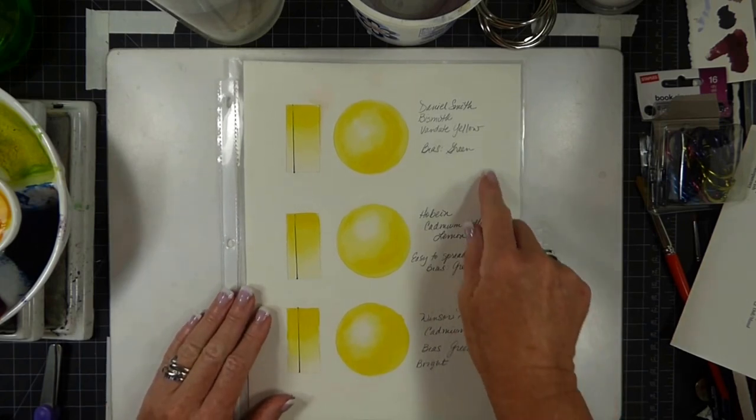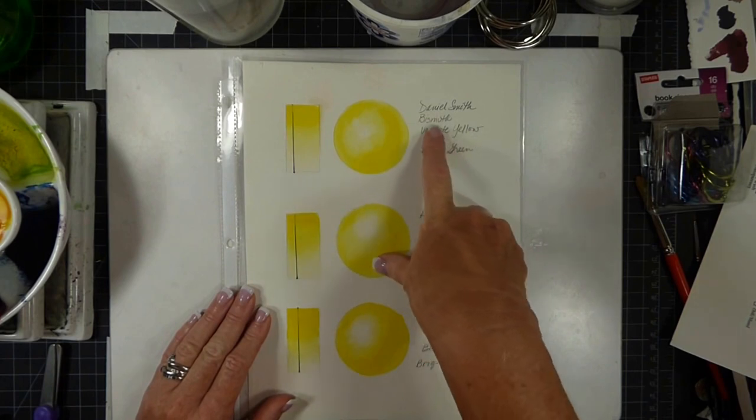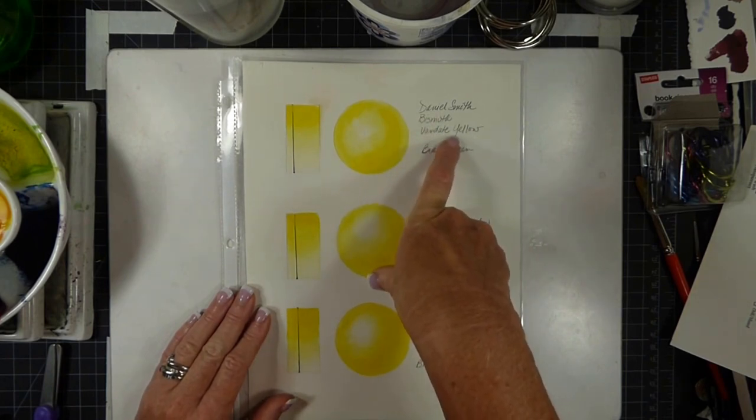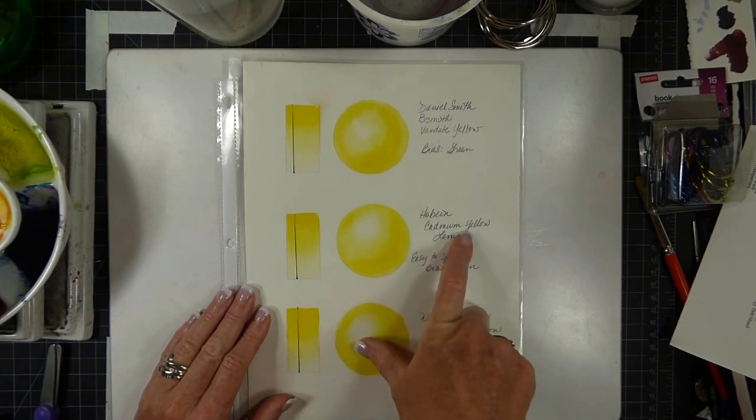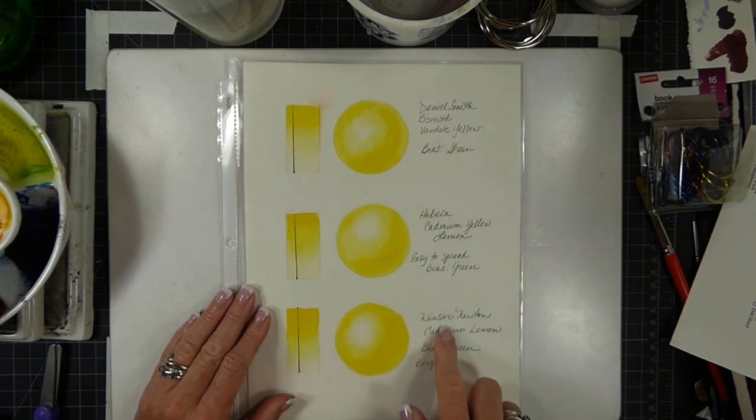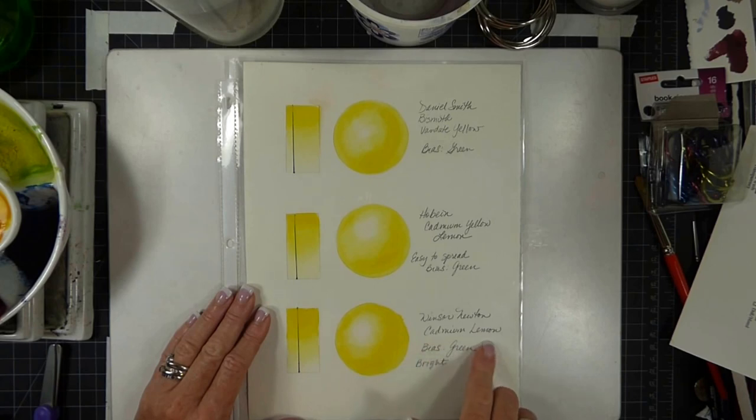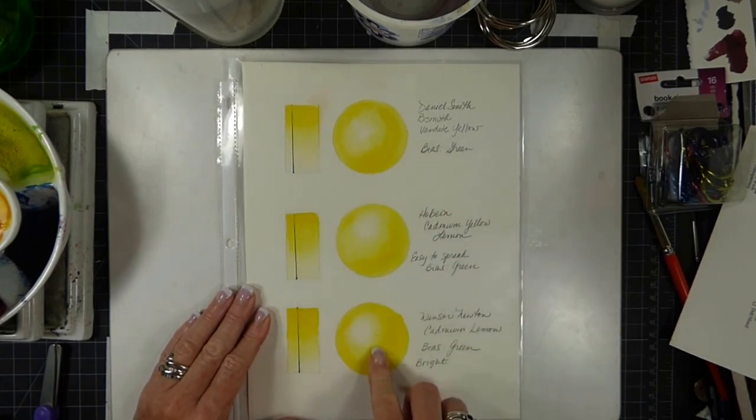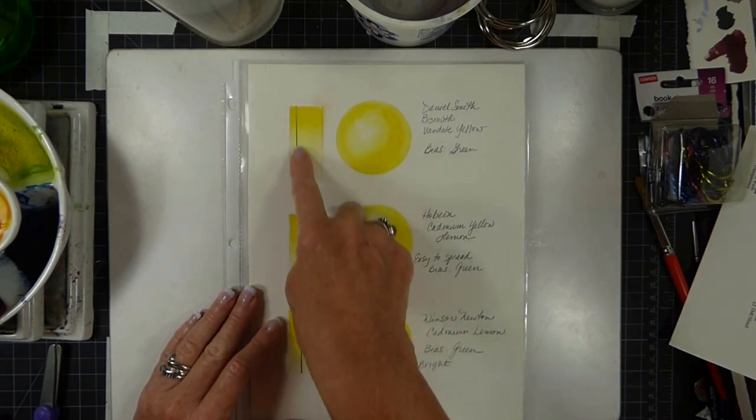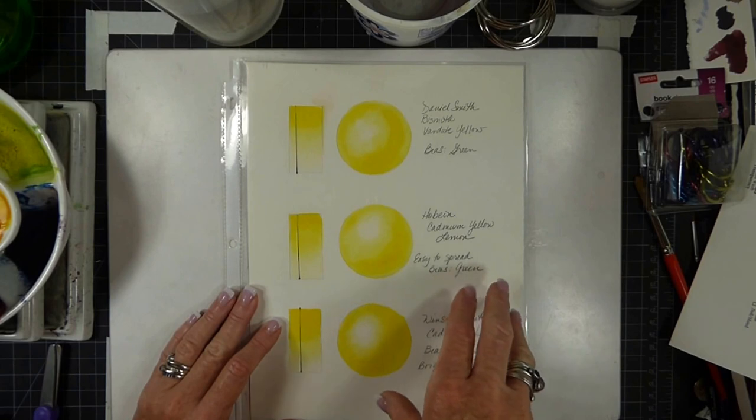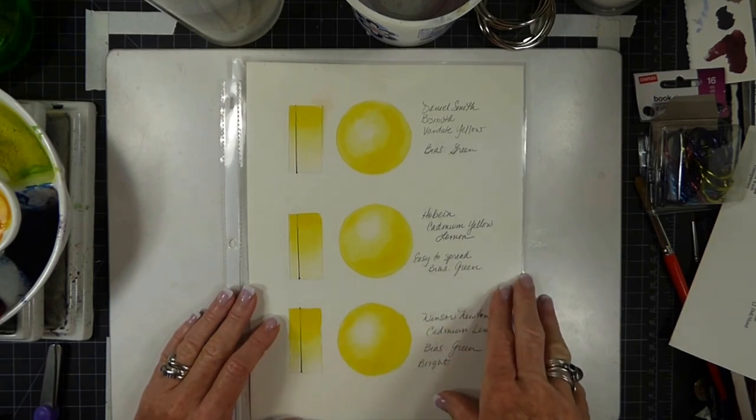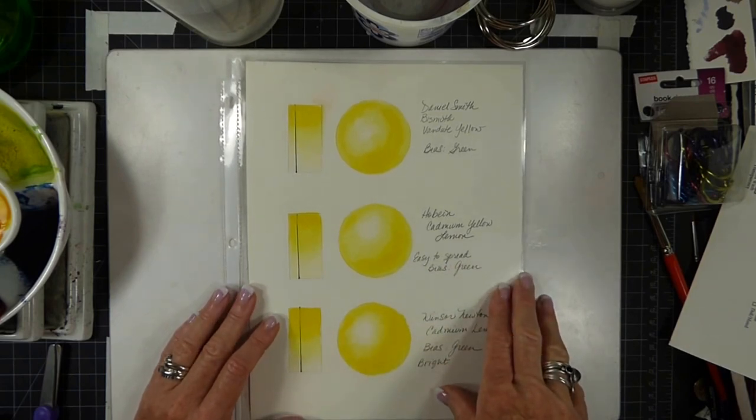On this particular page you'll see that I have Daniel Smith Bismuth Vanadate Yellow, Holbein Cadmium Yellow Lemon, and Windsor Newton Cadmium Yellow. They are all yellows and all three are very similar in their color. Here I've used the transparency to show how transparent they are.